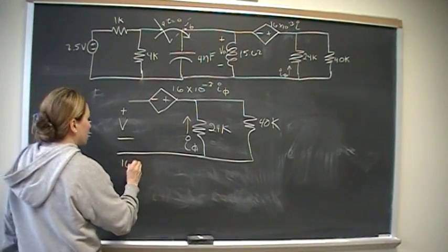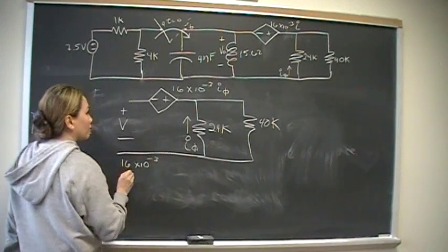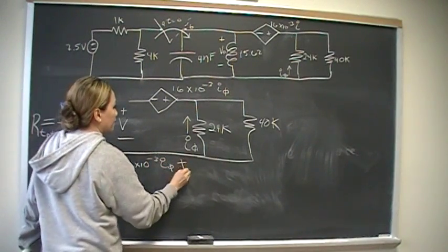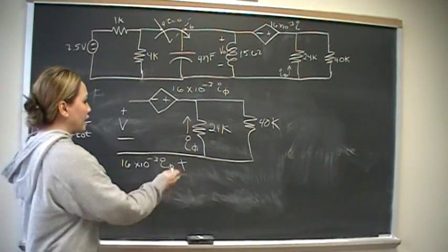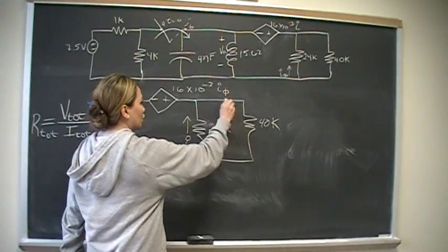So 16 times 10 to the minus 3rd, I sub V, plus the voltage across this is going to be I total, right?